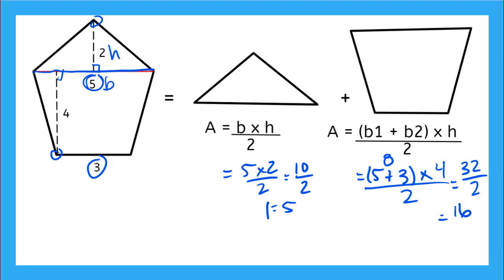So now if I take the area of my triangle and I add it to the area of my trapezoid, I'll have the area for this entire pentagon. So the area for my pentagon is equal to 5 plus 16, and that is equal to 21. Great job.